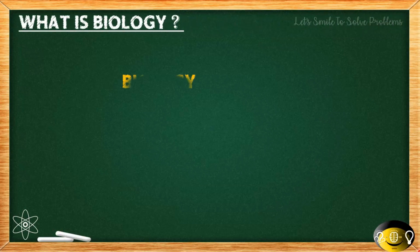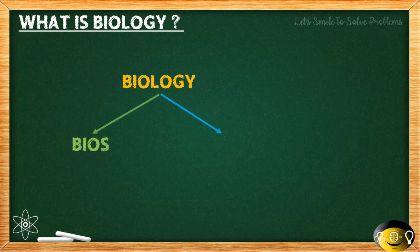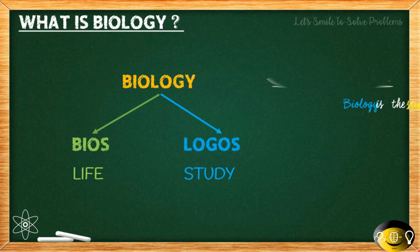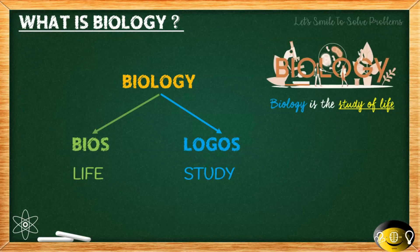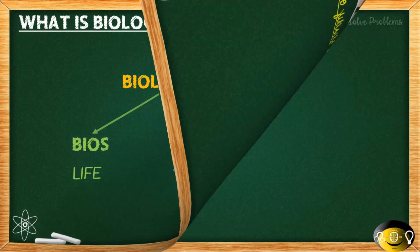The word biology is obtained from the ancient Greek language. The Greek words are bios and logos. Bios simply means life and logos means to study. So altogether, biology is the study of life.